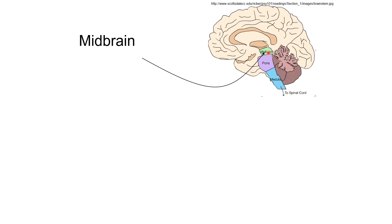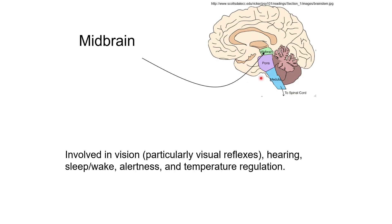Now let's look at the midbrain. The midbrain is this small structure in the middle of the brain and, like the pons and medulla, it is involved in some very basic functions of the body — mostly involuntary — like visual reflexes, hearing, control of the sleep-wake cycle, maintaining alertness, and maintaining body temperature. These are basic functions conserved across a variety of animals, and the midbrain itself is also a highly conserved structure.